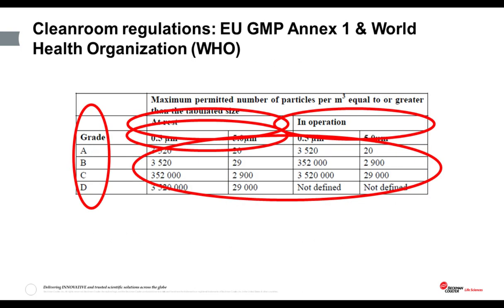Let's take a look at the GMP regulations controlling contamination levels in these clean rooms. This is the current table for air particle contamination in the European GMP Annex 1, which is also the same in the World Health Organization's guide for sterile manufacturing. There are four grades of clean room defined, from the very cleanest — grade A — through to the dirtiest — grade D. The European GMP calls for two particle sizes to be measured and reported: 0.5 micron and 5 micron particles.